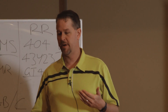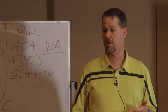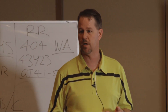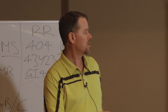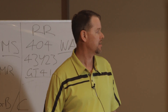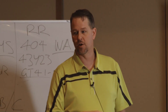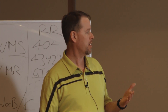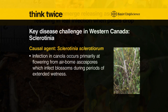One of the key constraints to successful production of canola, but not only canola, but for pulse crops as well, is a disease caused by Sclerotinia sclerotiorum. For us, infection in canola occurs primarily at flowering from airborne ascospores. Those ascospores infect the blooms or blossoms during periods of extended wetness.